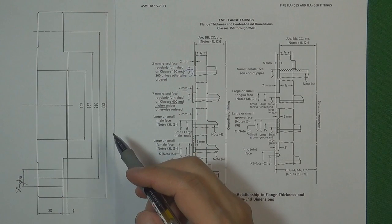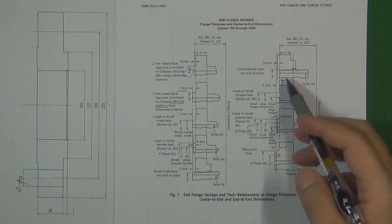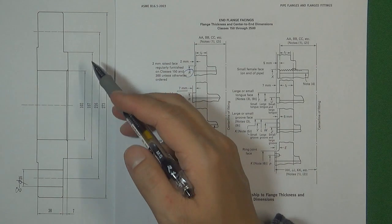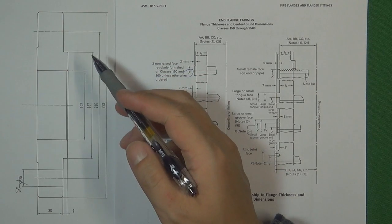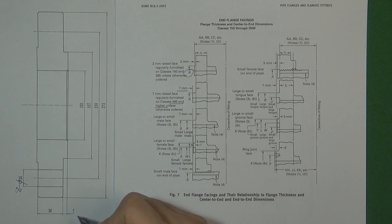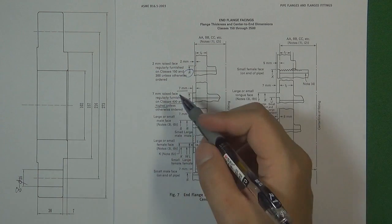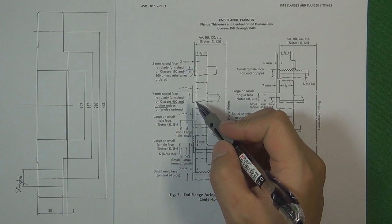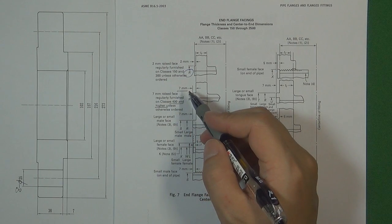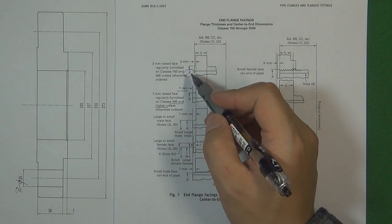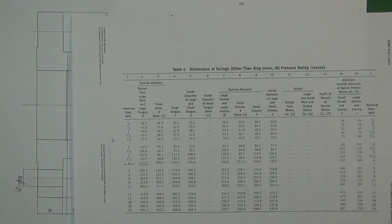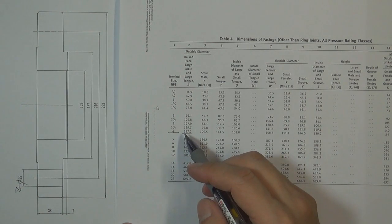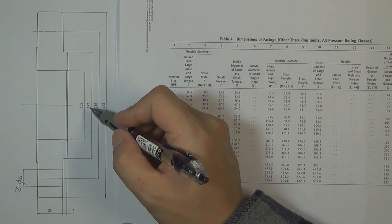The next dimension is for the gasket size. This flange is designed as an RF type flange, so we're only concerned with two dimensions: the gasket step diameter and the height of the gasket step. The height of the gasket step is 7 mm, because for flanges at 400 pressure class or higher, the RF flange gasket step height is 7 mm. The gasket step diameter is represented by R. From the table for a 4-inch size, R is approximately 157 mm. So the gasket step diameter is approximately 157 mm.